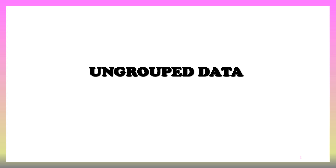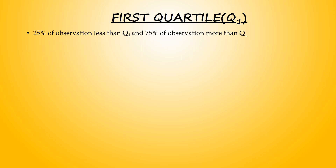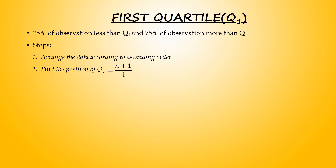We start with first quartile. Look at the definition: 25% of observations are less than Q1, and the other 75% is more than Q1. This covers three steps on how to calculate Q1.